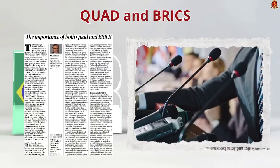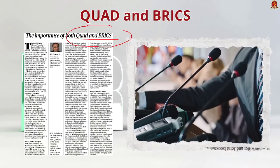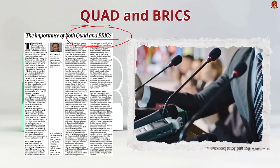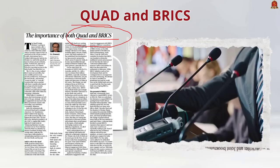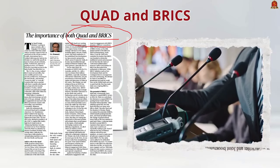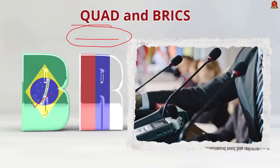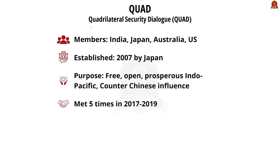India's membership in both QUAD and BRICS is significant. QUAD (Quadrilateral Security Dialogue) is a strategic security organization with members India, Japan, Australia, and the United States. It was established in 2007 by Japanese Prime Minister Shinzo Abe, aiming for a free, open, and prosperous Indo-Pacific region through diplomatic and military arrangements.